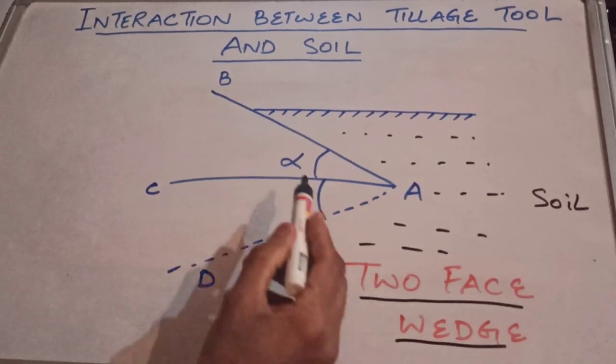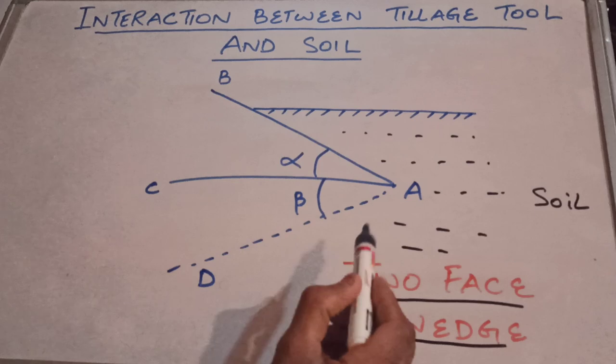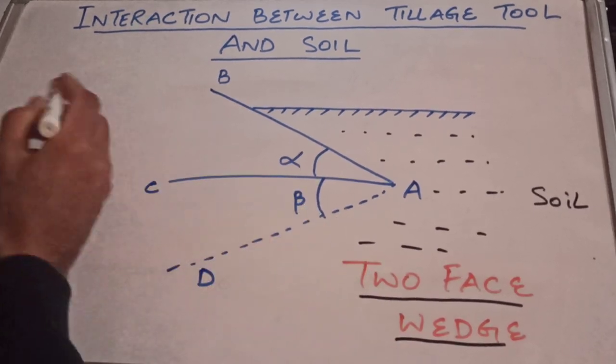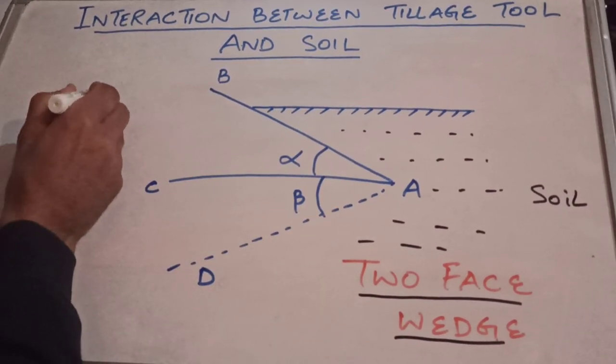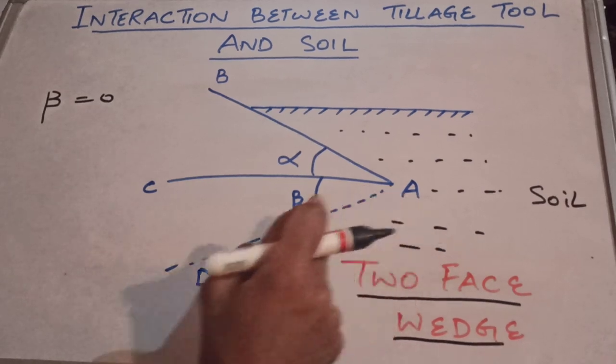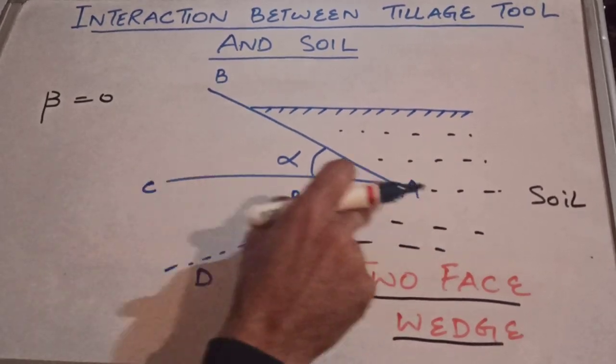It is making an angle of alpha and beta with the horizontal surface. Just assume that if angle beta is zero, then this AD surface will combine with AC surface, so your two phase wedge will become single phase wedge.